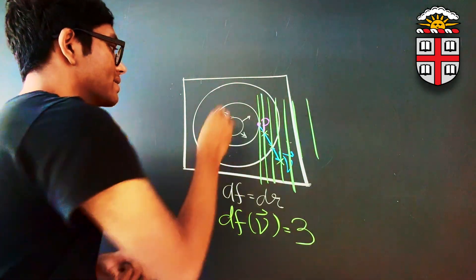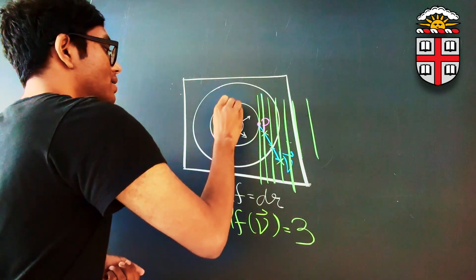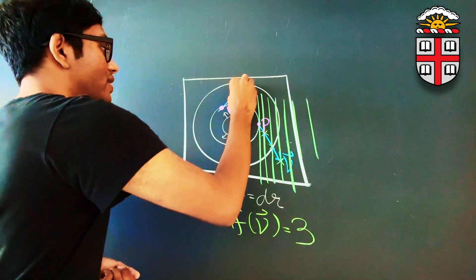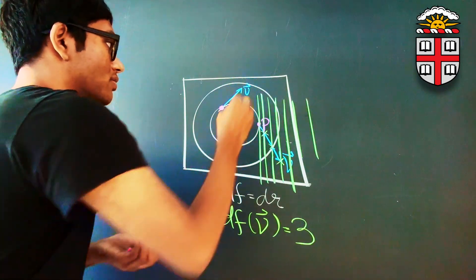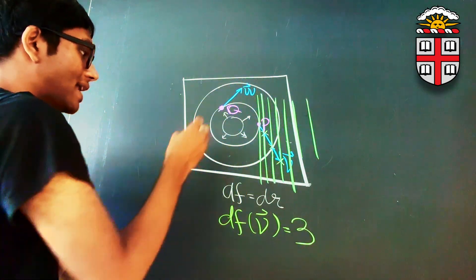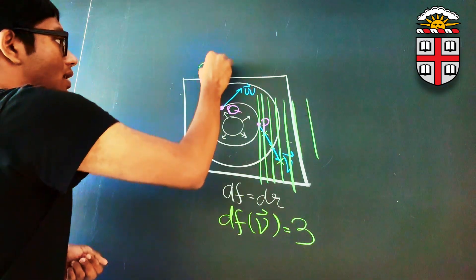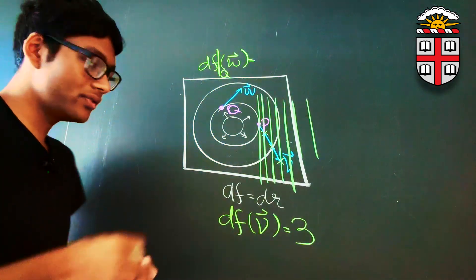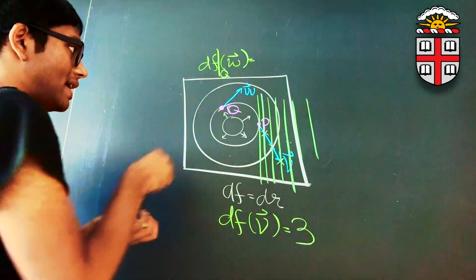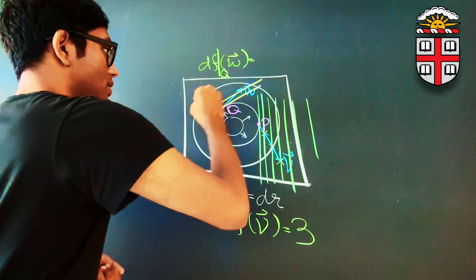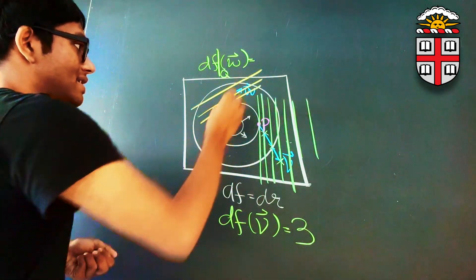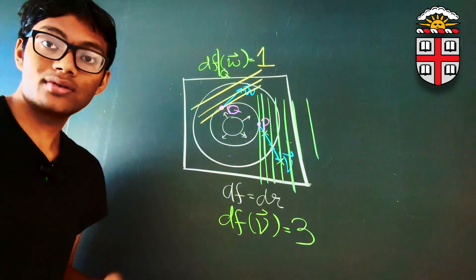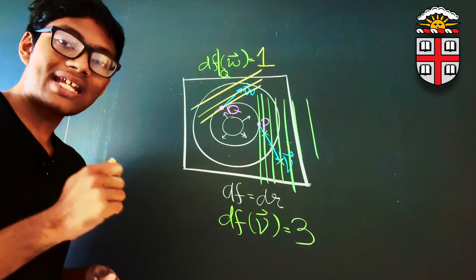Consider another point just for practice. Let's say we pick a point Q here and we have a vector w going in this direction. To calculate what df of w at point Q is equal to, all I have to do is construct the tangent field lines at point Q. The tangent lines at Q look like this. I see that w pierces basically just one tangent line. So df of w at point Q is just 1.